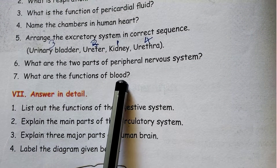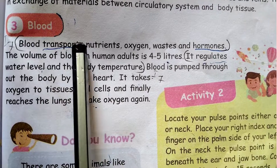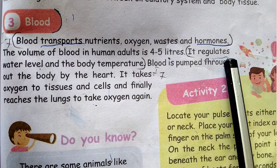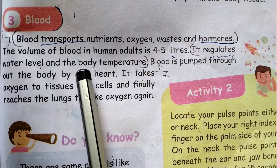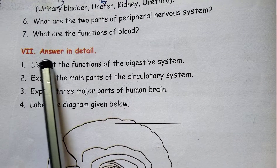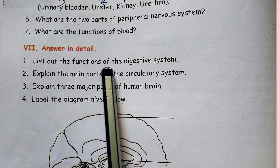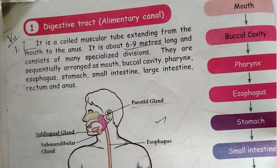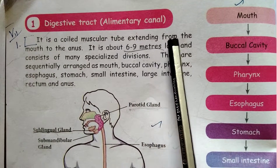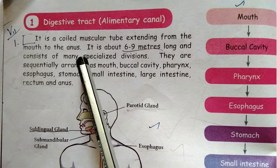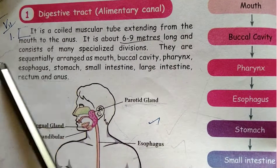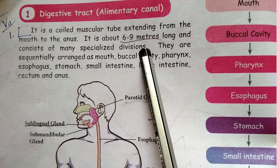What are the functions of blood? Blood transports nutrients, oxygen, waste hormones, and it regulates water level and body temperature. List the functions of the digestive system. It is a coiled muscular tube extending from the mouth to the anus. It is about 6 to 9 meters long and consists of many specialized divisions.